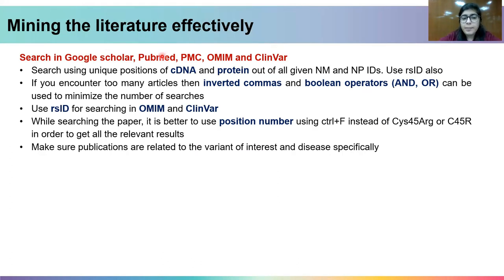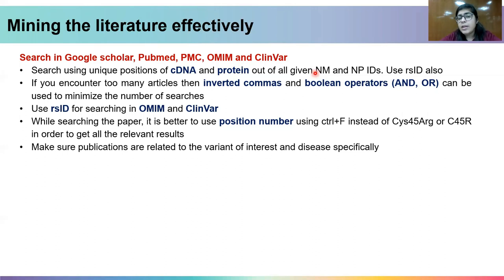In order to mine the literature effectively, one can search in Google Scholar, PubMed, PMC, OMIM, and ClinVar by using the unique positions of cDNA and protein out of all the given NM and NP IDs. This was a common concern — whenever we use VEP, we get a number of NM and NP IDs.